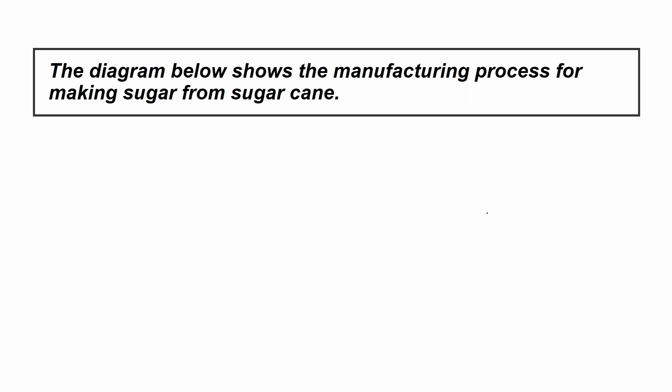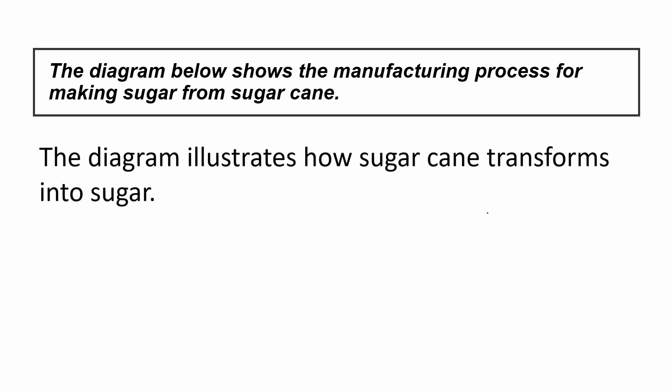Step three is to paraphrase. This is my paraphrase: 'The diagram illustrates how sugarcane transforms into sugar.' I delete 'below' because there is nothing below my writing. Instead of 'shows' I use 'illustrates,' and instead of 'the manufacturing process for' I used 'how transforms into.'